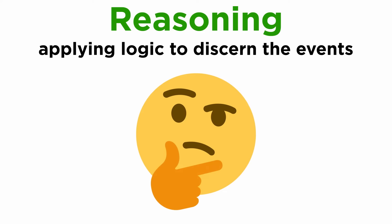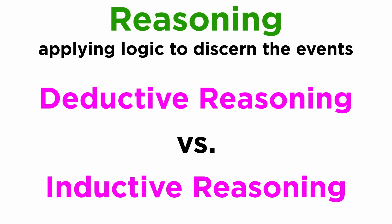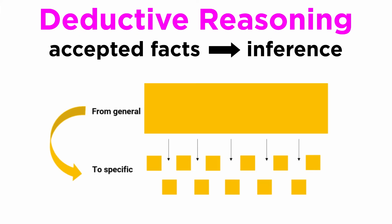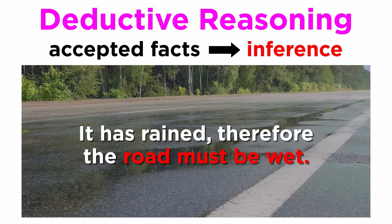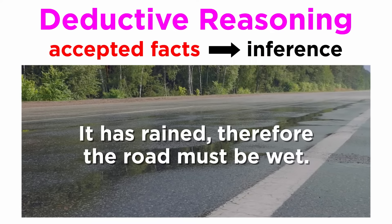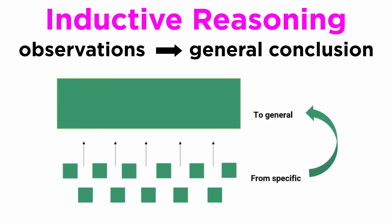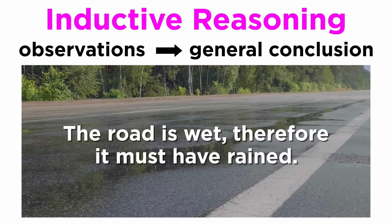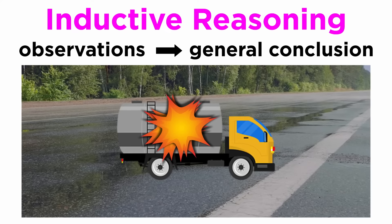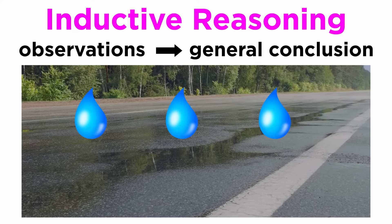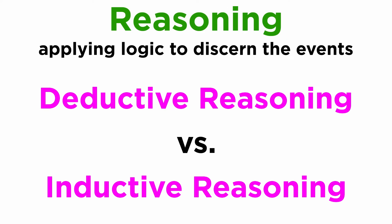The first pillar is reasoning. It includes applying logic and reason to discern the events of the crime. We mentioned two types of reasoning — deductive and inductive — while studying the law of probability. Deductive reasoning is when we make an inference from commonly accepted facts. For example, it has rained, therefore the road must be wet. In contrast, inductive reasoning is where we make observations and come to a more general conclusion. For example, the road is wet, therefore it must have rained. Here it is not necessary that the conclusion must be correct, but it is the most plausible one. The road can be wet due to a tanker spilling water as well, but rain is the most plausible explanation. The investigator uses both types of reasoning while investigating a crime.